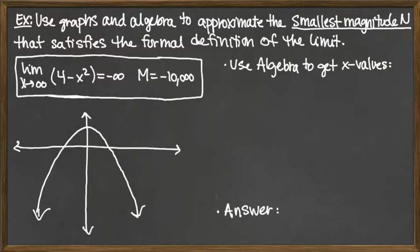So we do see that as x is going out to infinity, as we're looking out to the right side of this graph, the function is going down to negative infinity. So this does make sense. And so what we're doing here, pictorially, is we're looking at M being negative 10,000, a very big negative number.